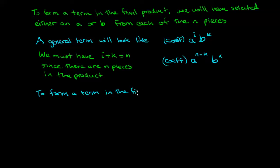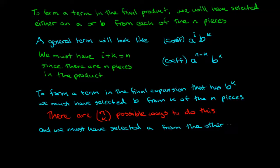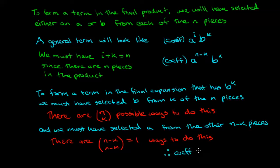To form a term in the final expansion that has b to the power of k we must have selected b from k of the n pieces and there are n choose k possible ways to do this. We must also have selected a from the other n minus k pieces and how many ways are there to do that? n minus k choose n minus k which equals one. Therefore our coefficient is equal to n choose k and this completes our proof.